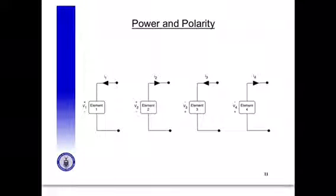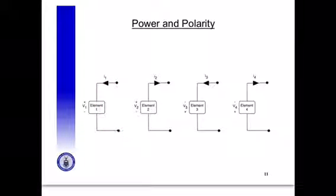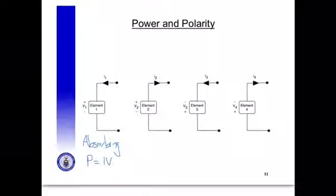On this page I've indicated some generic elements — we don't know whether these elements are sources or resistors. For element one, the higher voltage is here and the lower voltage is there, and the current is flowing from the higher voltage to the lower voltage. So element one is absorbing power, and the power is the current times the voltage. For element two, the higher voltage is here and the lower voltage is there, and the current is flowing from the lower voltage to the higher voltage, so element two is supplying power.